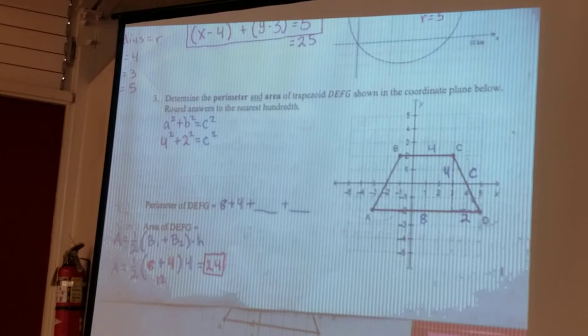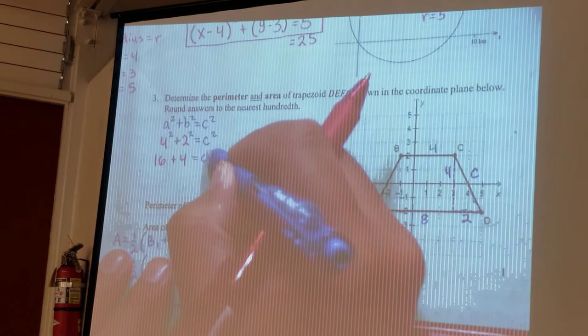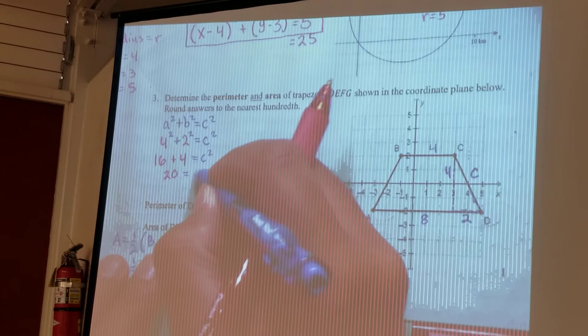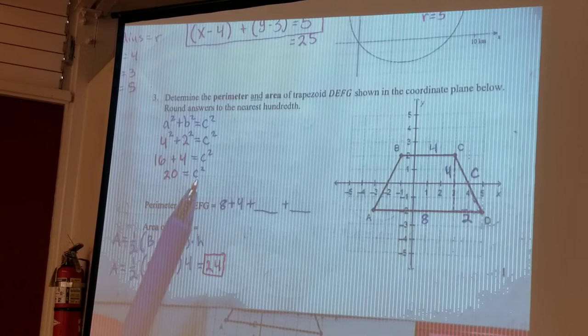Square those out, that gives me 16 plus 4 is equal to C squared which is 20, and then once I get to this point I need to solve for C, so to get rid of the square I need a square root.